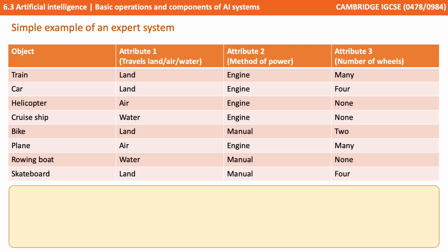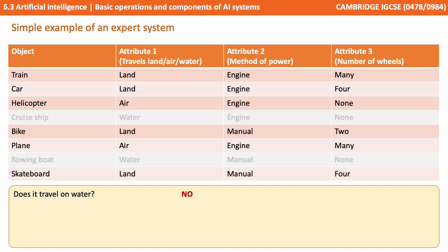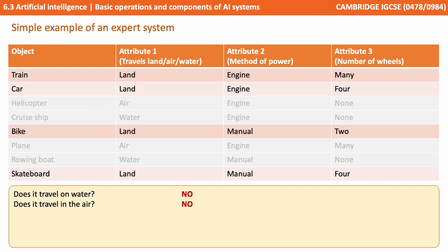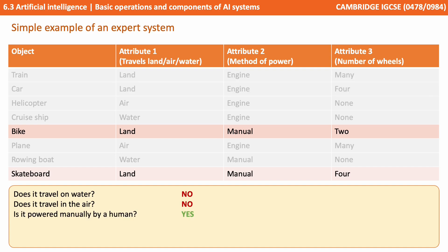Here we have an incredibly simplistic and highly abstracted example of an expert system. We have a number of objects down the left hand side, and then some attributes in the three columns, and this would form the knowledge base. We then ask a series of questions: Does it travel on water? No. Does it travel in the air? No. Is it powered manually by a human? Yes. Does it have two wheels? Yes. Then our expert system has concluded that we must be talking about a bike.